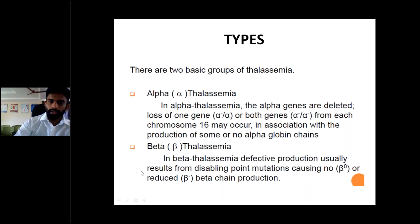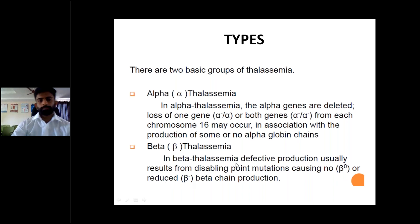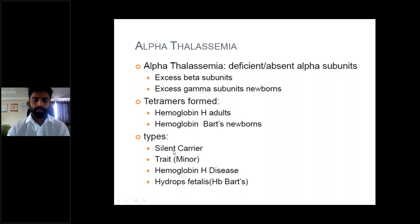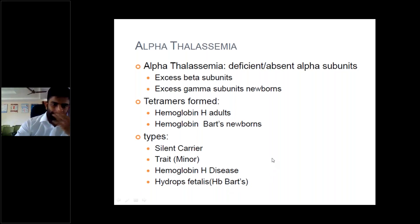In alpha thalassemia, there is deficient or absent alpha subunits, causing excess beta subunits to be produced, and excess gamma subunits in newborns. The tetramers formed are hemoglobin H in adults and hemoglobin Barts in newborns. The four types of alpha thalassemia are: silent carrier (no manifestation), alpha thalassemia trait (similar to beta thalassemia minor), hemoglobin H disease, and hydrops fetalis — also called hemoglobin Barts — which is a fatal disease seen in stillborn newborns.